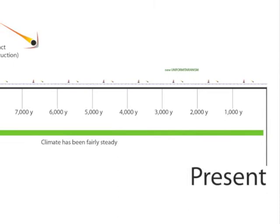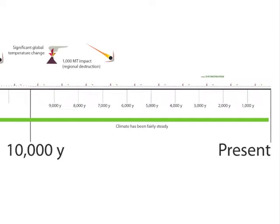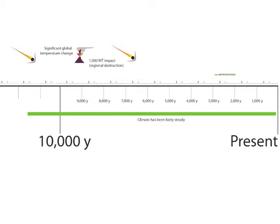Zooming out by another power of 10 to 10,000 years, the average largest volcano and meteoroid impact on this timescale would have very serious global consequences. Notice also that over the last 11,000 years until the very recent past, climate has been very steady, but that's changing now.